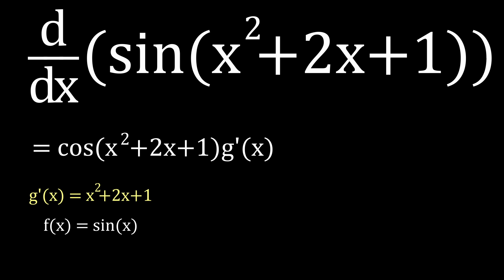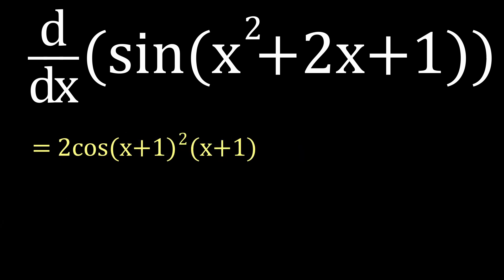We can take the derivative of each individual term. This is 2x through the power rule, 2 through the power rule, and 0 through the power rule. The final derivative is equal to the cosine of x squared plus 2x plus 1 multiplied by 2x plus 2, which we can factorize to make it look a bit prettier.